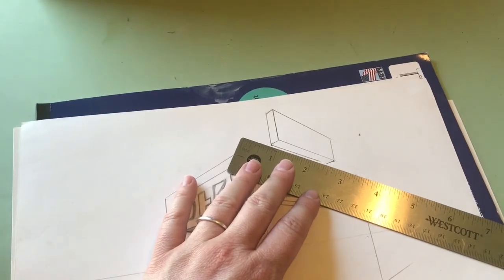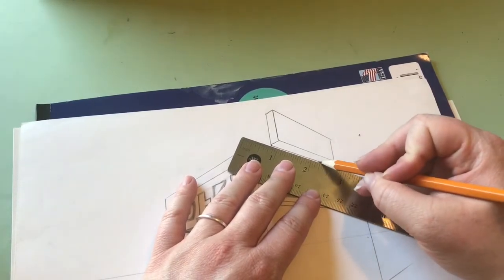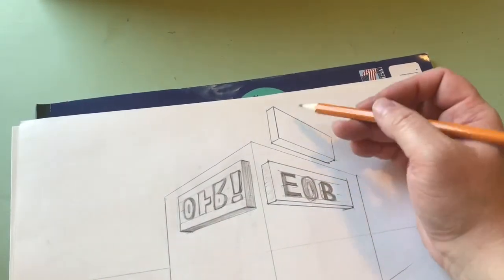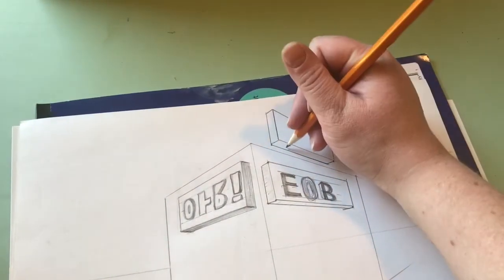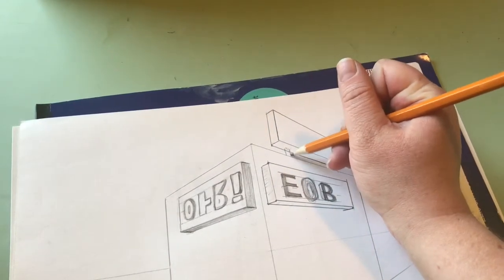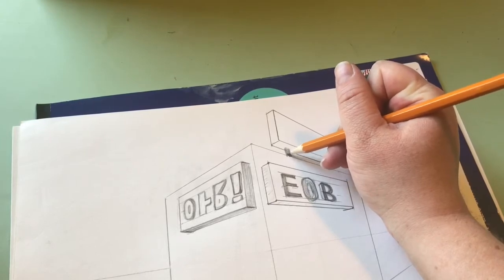I didn't go far enough. This looks like it's floating. So I could do different things. I could either put a post that goes straight down underneath, right?